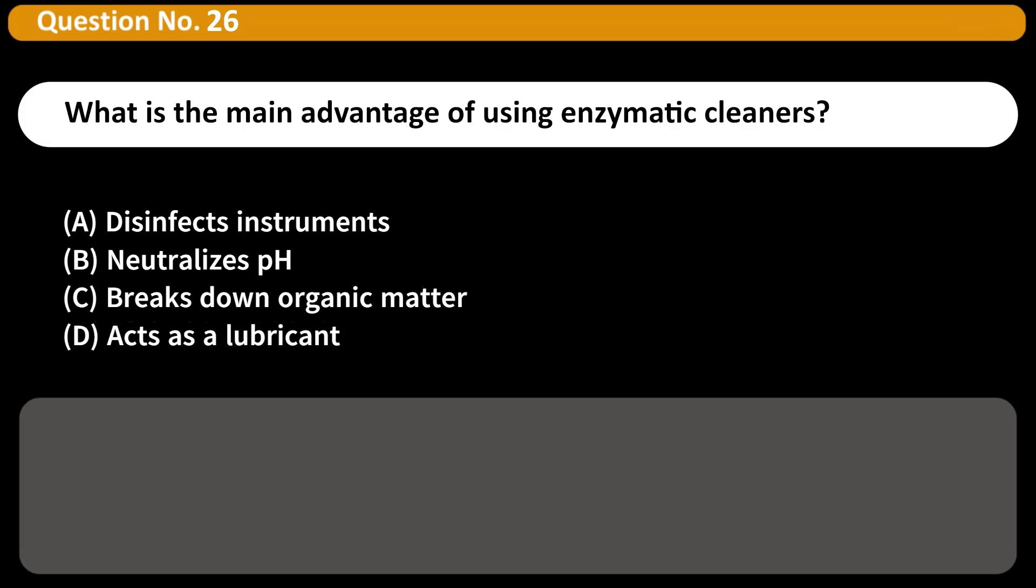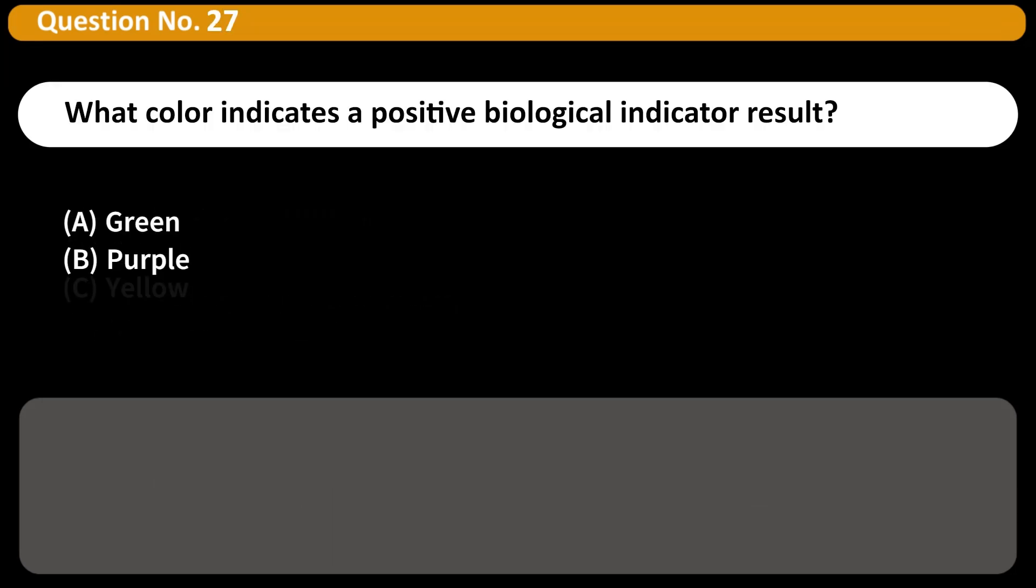What is the main advantage of using enzymatic cleaners? A. Disinfects instruments, B. Neutralizes pH, C. Breaks down organic matter, D. Acts as a lubricant. Answer C. Enzymatic cleaners digest proteins and organic debris for better cleaning.